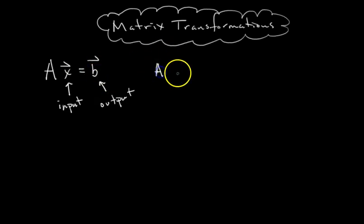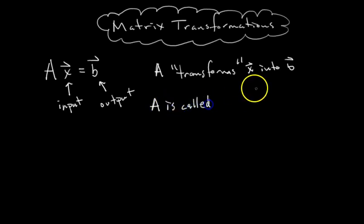So we could say the matrix A transforms X into B. Hence the term matrix transformation. So A has a special term. A is called the standard matrix.